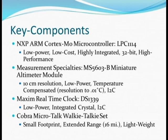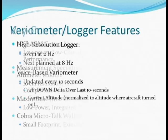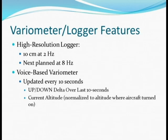The logger variometer also includes a Maxim real-time clock, the DS1339U in this case. It's low power, it has an integrated crystal, and it's I-squared-C compatible. And of course the Cobra microtalk walkie-talkie set — it's got a small footprint, extended range out to about 16 miles, and it's very lightweight.